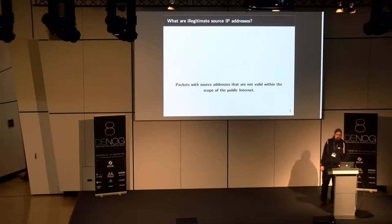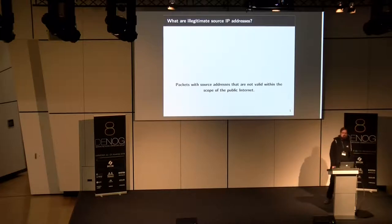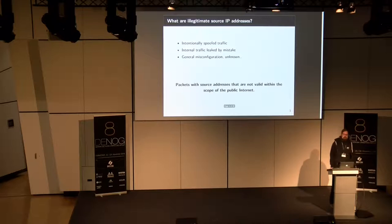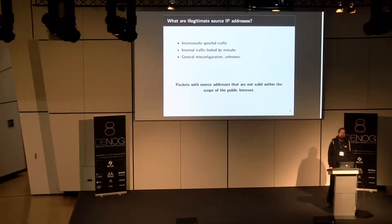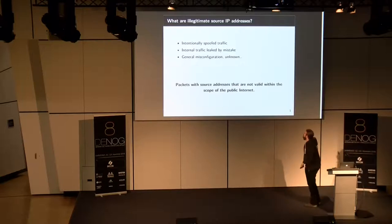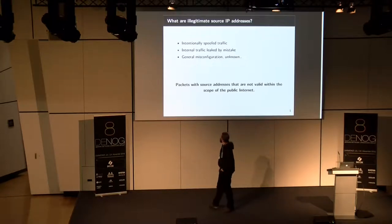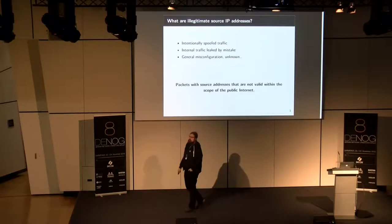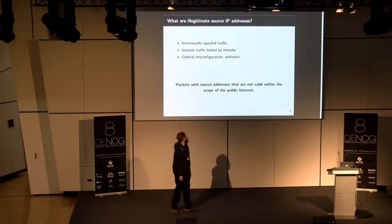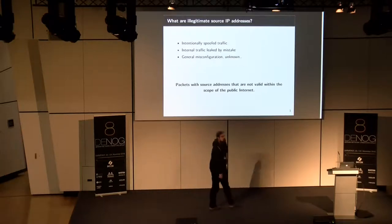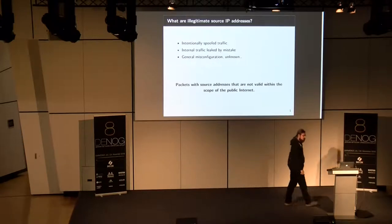So what are illegitimate source IP addresses? In our case, it's all packets with source addresses that are not valid within the scope of the public internet. We see intentionally spoofed traffic for denial-of-service attacks — we all know this from DNS and NTP amplification attacks. Then we see internal traffic leaked by mistake due to misconfiguration of equipment, usually some masquerading or NAT-ing going wrong, or general misconfiguration where people are not handling their equipment correctly.